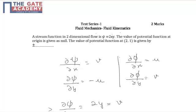Hello students. This is a two-mark question from the topic of fluid mechanics, from chapter fluid kinematics. It is a very good question to study the relation between stream functions and potential functions. A stream function in two-dimensional flow is given as psi equal to 2xy, and the value of potential function phi is given as 0 at the origin. It is asked: what is the value of potential function at (2,1)?